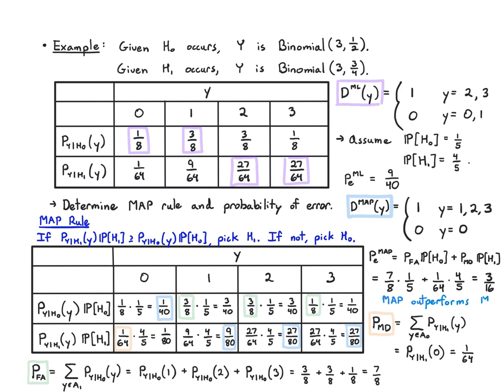That's no surprise because the MAP rule is the optimal thing to do. And the ML rule is just something to do. The only downside to MAP is I need to know these hypothesis probabilities, which in practice I may not always have.